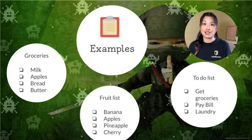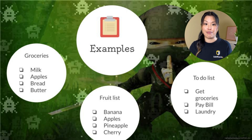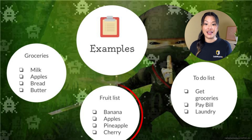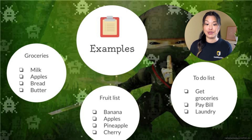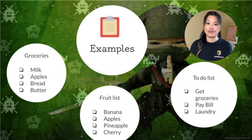Here we've got some lists of different things. As an example, we've got our grocery list, fruit list, and to-do list. We've got a bunch of different items on each of these lists, but they're together because they're kind of similar. So many things in real life are also grouped like this.